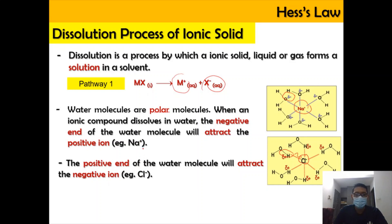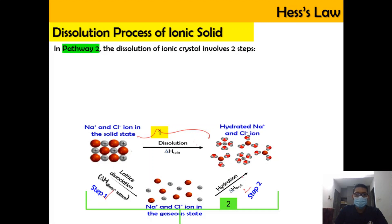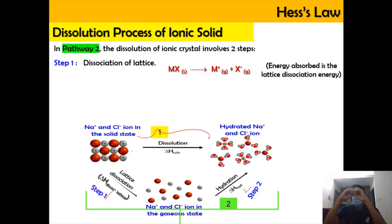An example of an ionic solid is NaCl. The pathway just described is pathway 1. However, the ionic solid in the solid state can also undergo pathway 2, which involves two steps. In step 1, the ionic solid undergoes lattice dissociation — from the NaCl solid state, it is dissociated to form M⁺ gaseous ions and X⁻ gaseous ions. This process involves energy absorption because bonds in the solid state must be broken to separate into gaseous ions.